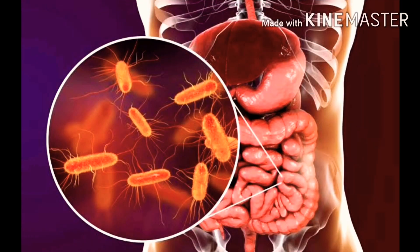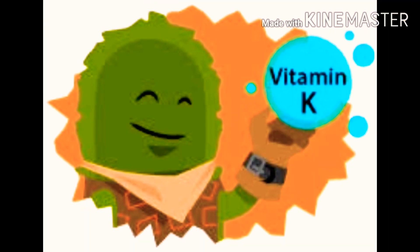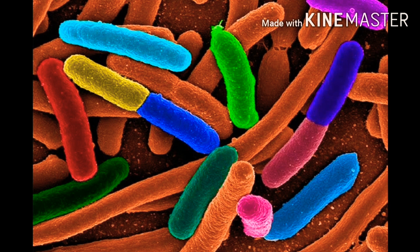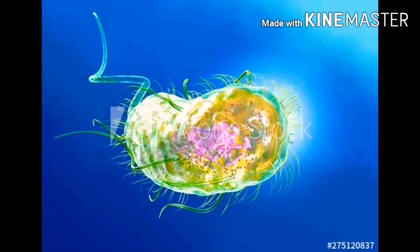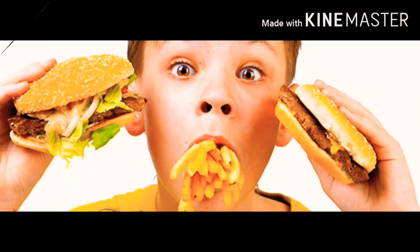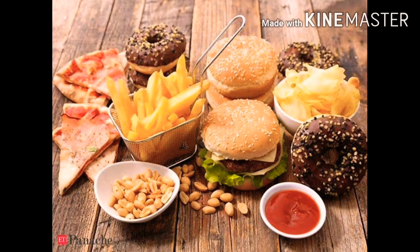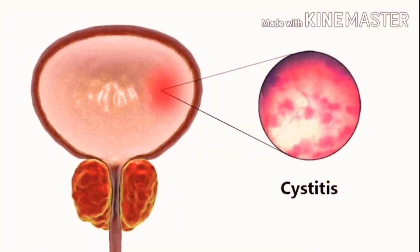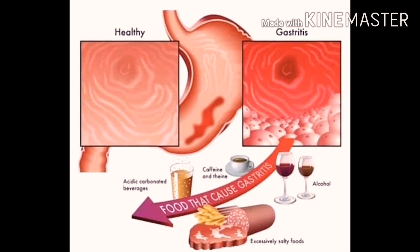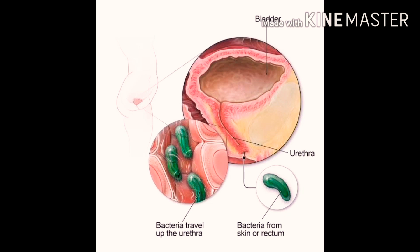E. coli is part of the normal flora in our intestine, providing our body the ability to absorb vitamins and inhibit pathogenic bacteria such as Salmonella and Shigella. However, it turns into an opportunistic bacterium once the pH of the intestine changes due to poor hygiene and unhealthy food, and may cause cystitis, gastritis, and urinary tract infections.